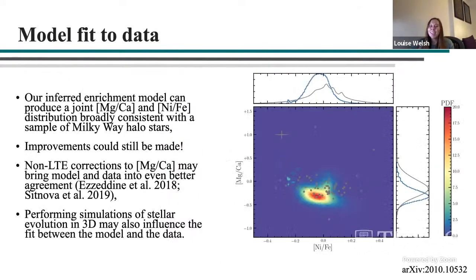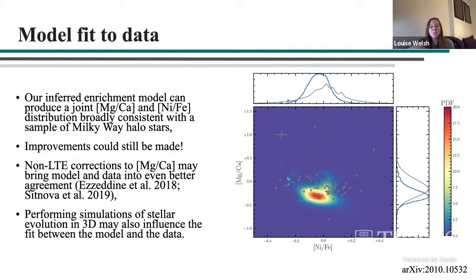One question is how well this model actually replicates the data. Here I'm showing the magnesium-to-calcium and nickel-to-iron abundance expected given our inferred enrichment model, with the stellar data from the three pre-2014 samples overplotted on that density contour.